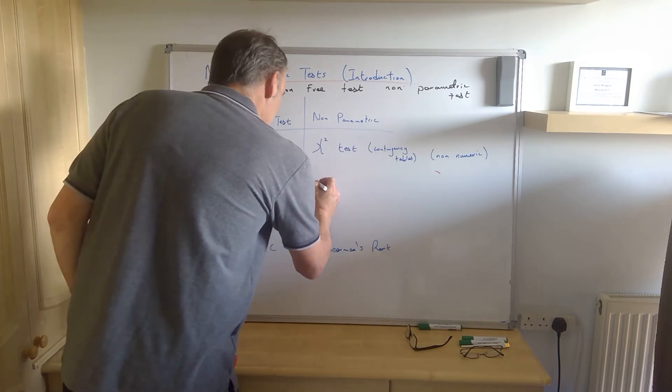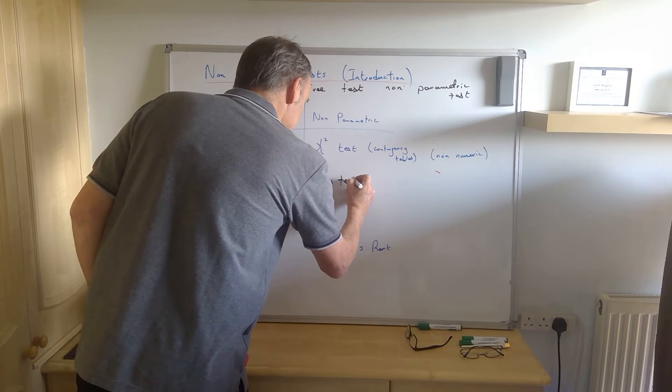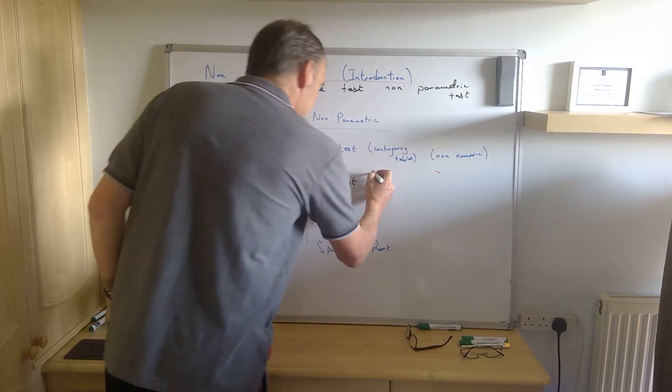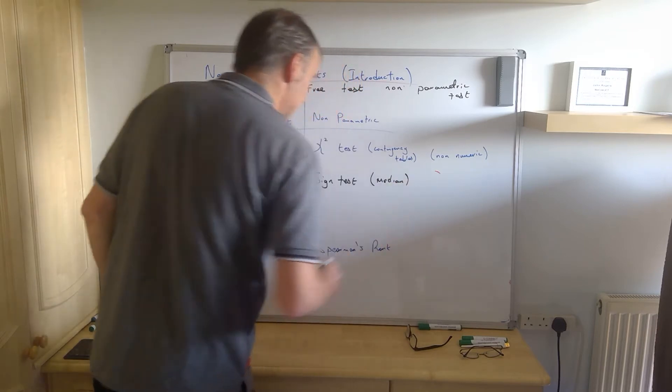The first one, probably the most crude of them but can be useful in certain instances, is a sign test. That's tested against the median. In fact, they're all tested against the median, really.